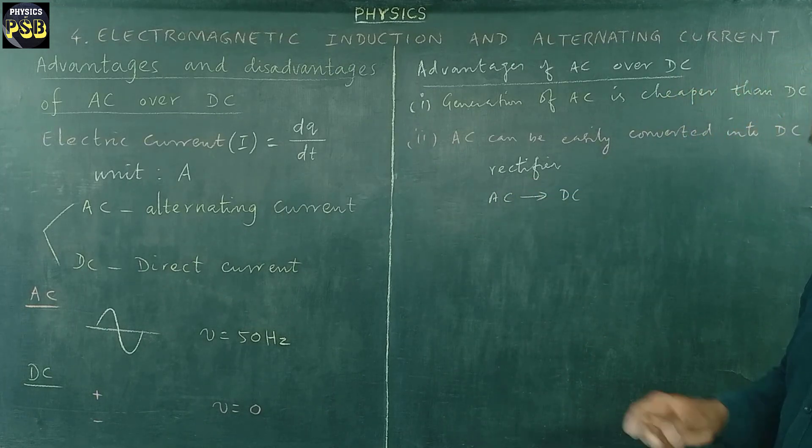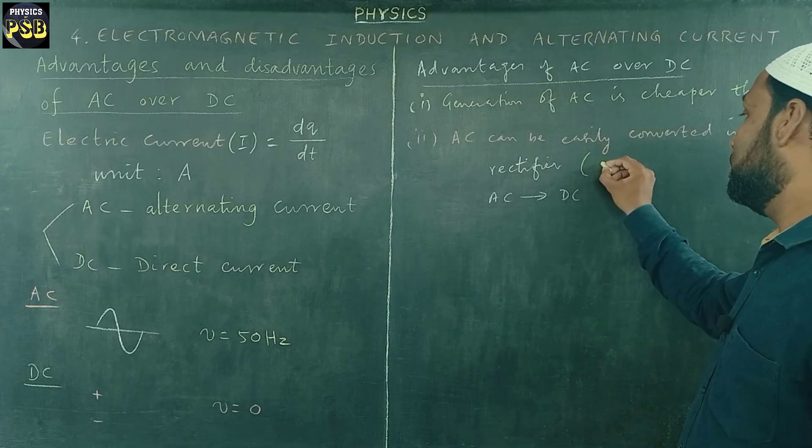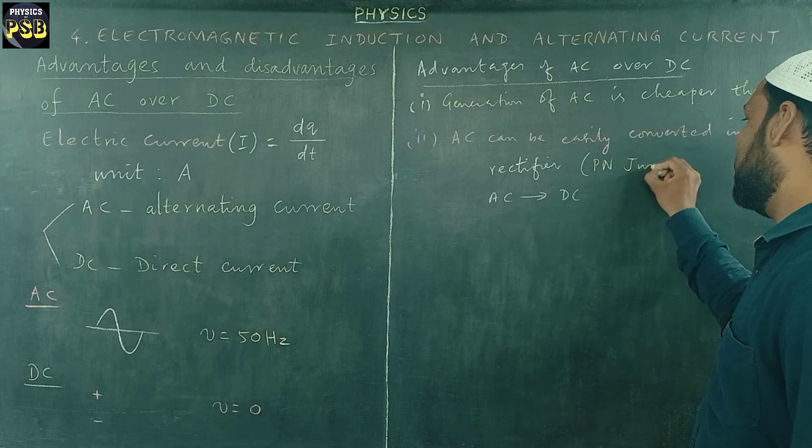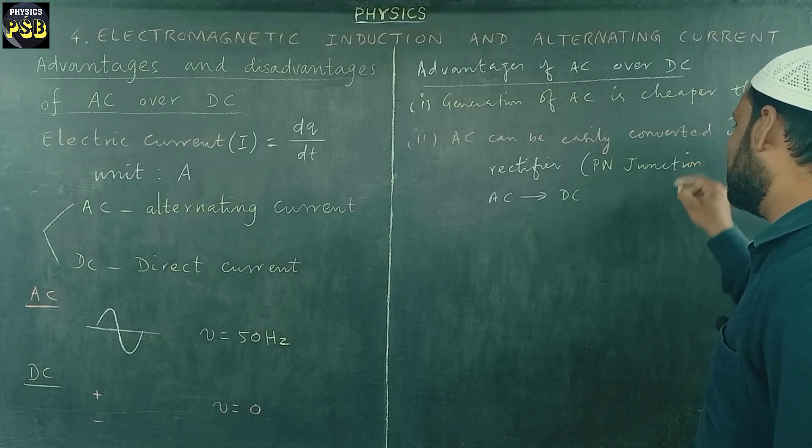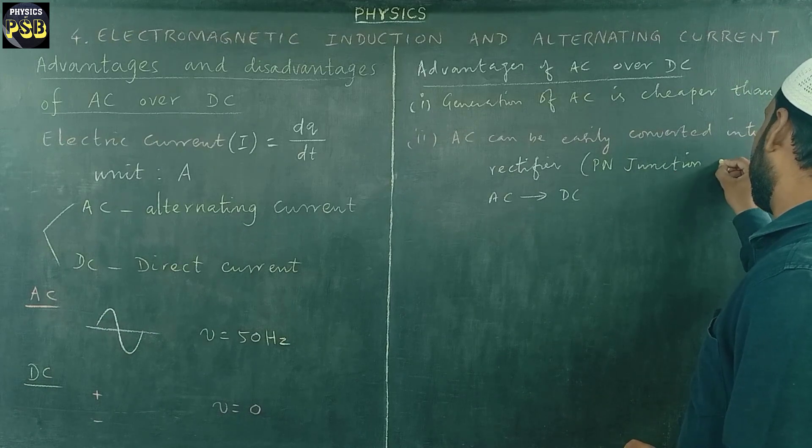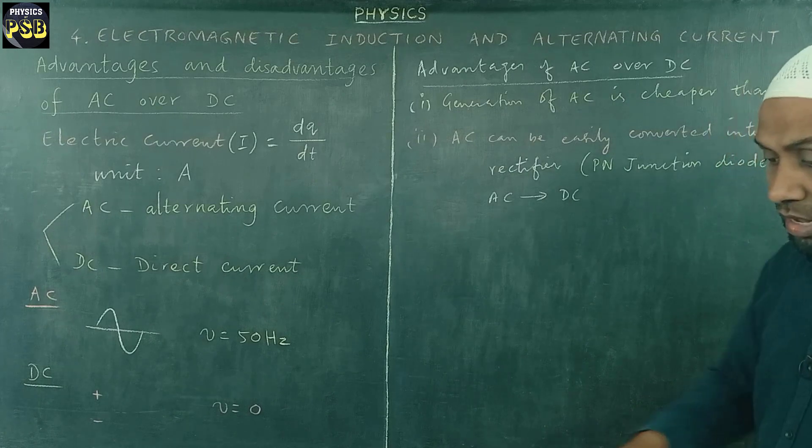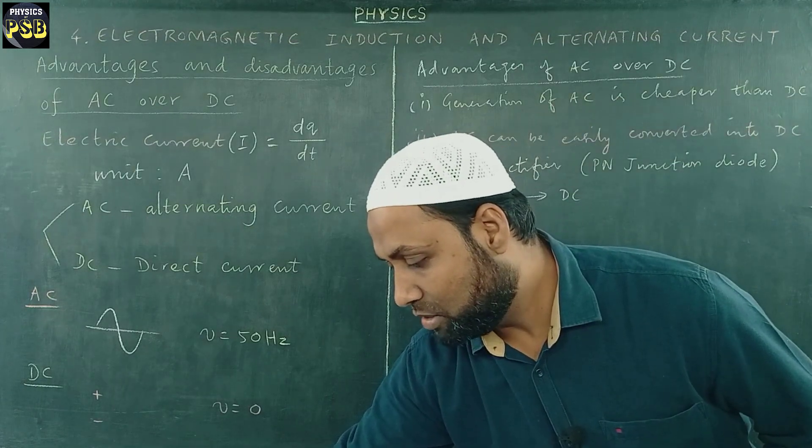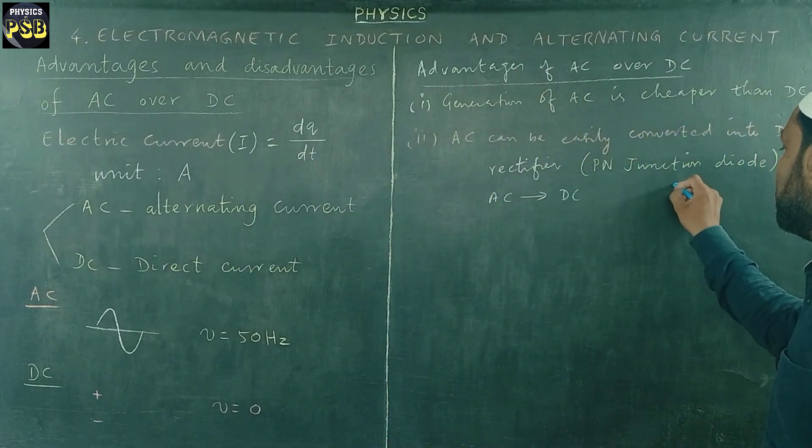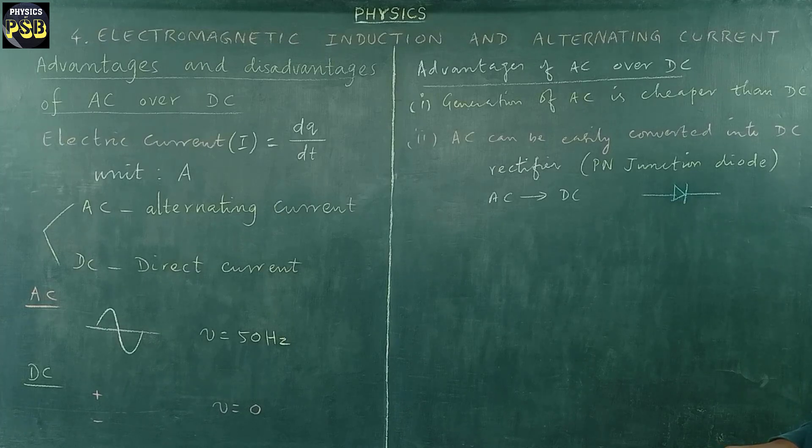And what is this rectifier? The simple rectifier we come across is nothing but diode, PN junction diode. It is a simple device which converts AC into DC. This is a PN junction diode. It is represented by a symbol which appears something like this. About this, I will learn in another chapter in details.